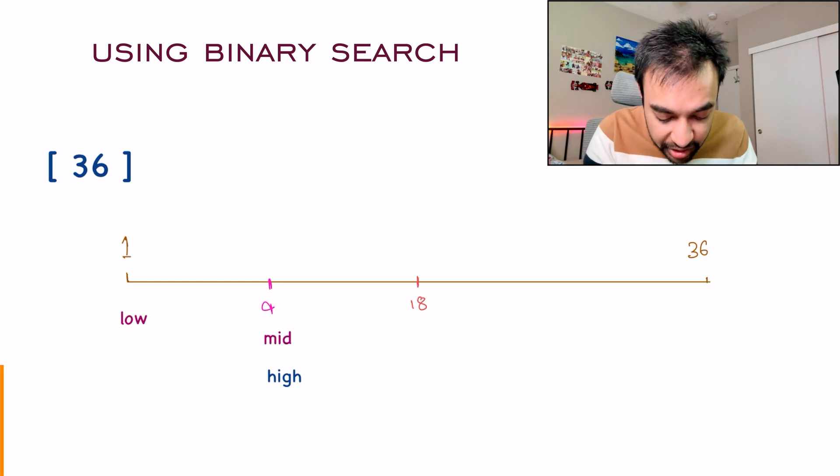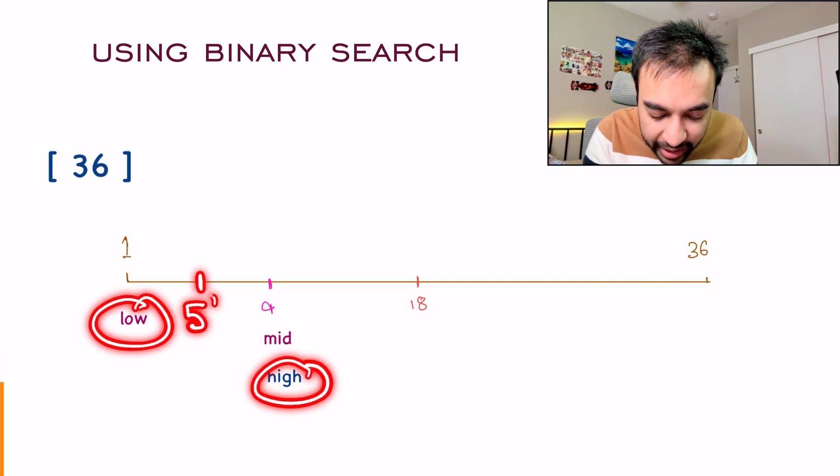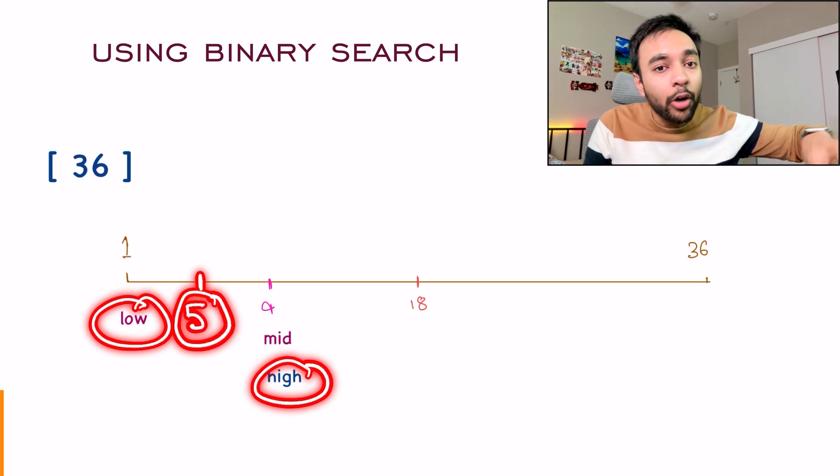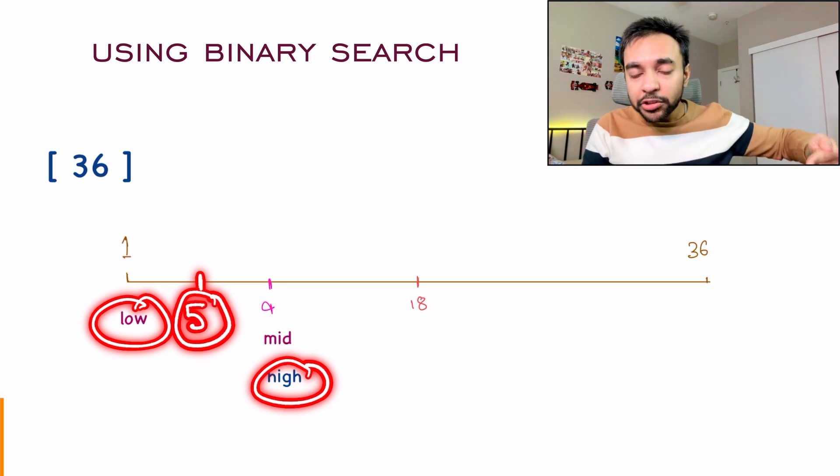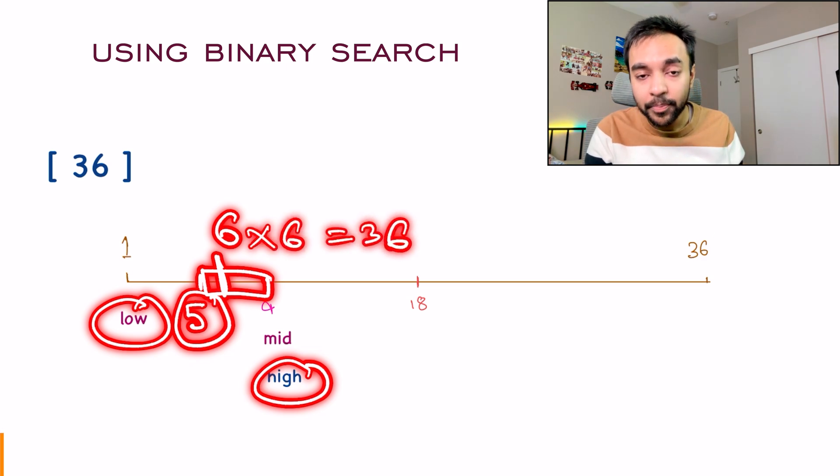Again, apply the binary search. Low is 1, high is 9. So mid will be somewhere around here, that is 5. So that is how you are going to approach it. Once you have found out 5, again, you will apply the binary search on this segment. Ultimately, you will arrive at a value that is 6 and 6 into 6 will be equal to 36. That is how you found out that 36 is a perfect square and you did not use any of the library functions.